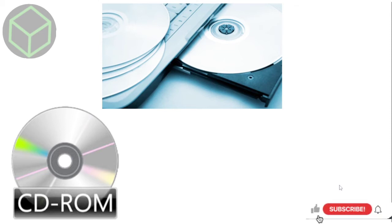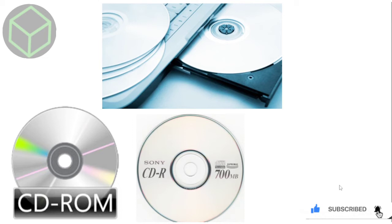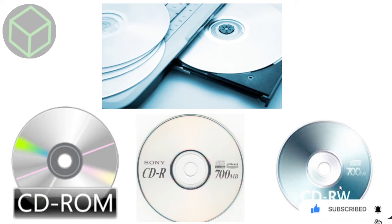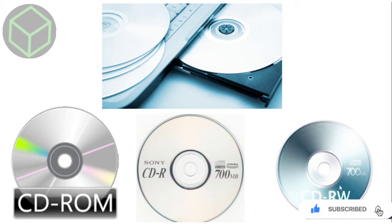The first type is CD-ROM, in which data is recorded at the time of manufacturing and cannot be erased or changed. Next is CDR — these are recordable CDs on which data can be stored, but once only. The last type is CDRW — these are rewritable discs whose data can be changed any time if needed.